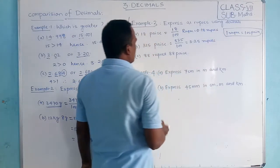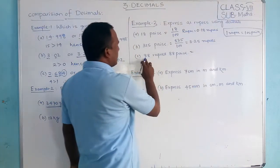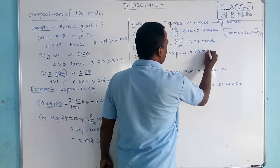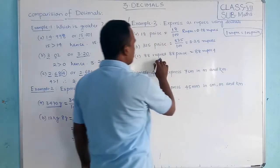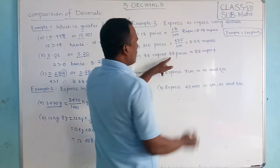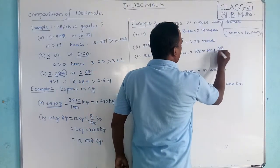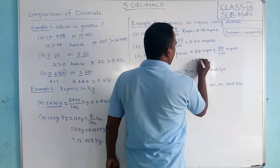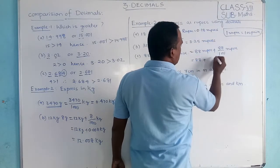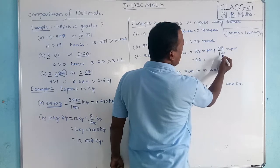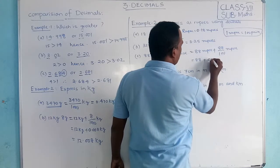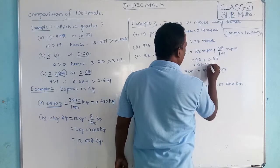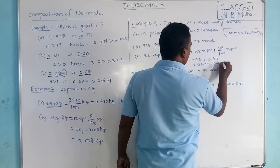Here we have 88 rupees and 88 paise. Since we already have rupees, we only convert the paise part: 88 paise divided by 100. There are 2 digits, so place the decimal 2 places. This gives 0.88, and adding the 88 rupees: 88 + 0.88 = 88.88 rupees.